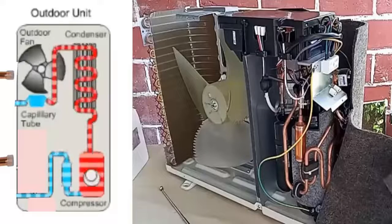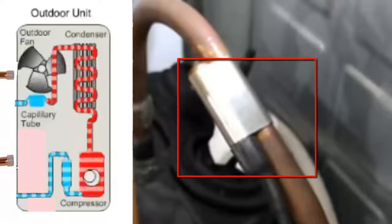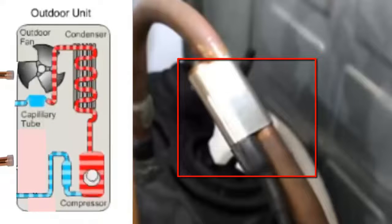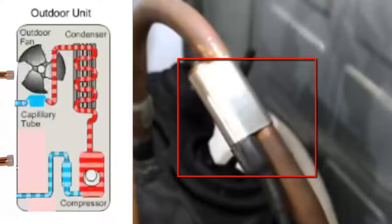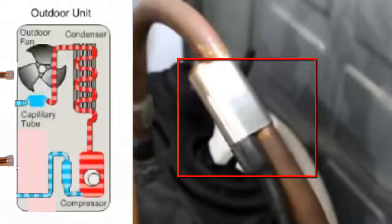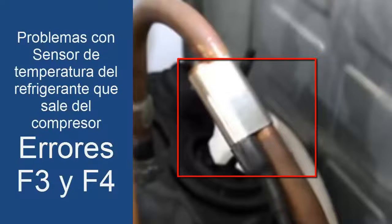We can also find a sensor at the compressor discharge, where the high-pressure refrigerant exits at high temperature through the thinner tube of the compressor. This sensor measures the temperature value to protect the compressor so it does not exceed safe values. This is very important, especially when working with refrigerants with high temperature discharge values such as R32. When this sensor has a problem, the codes that are presented are generally F3 and F4.